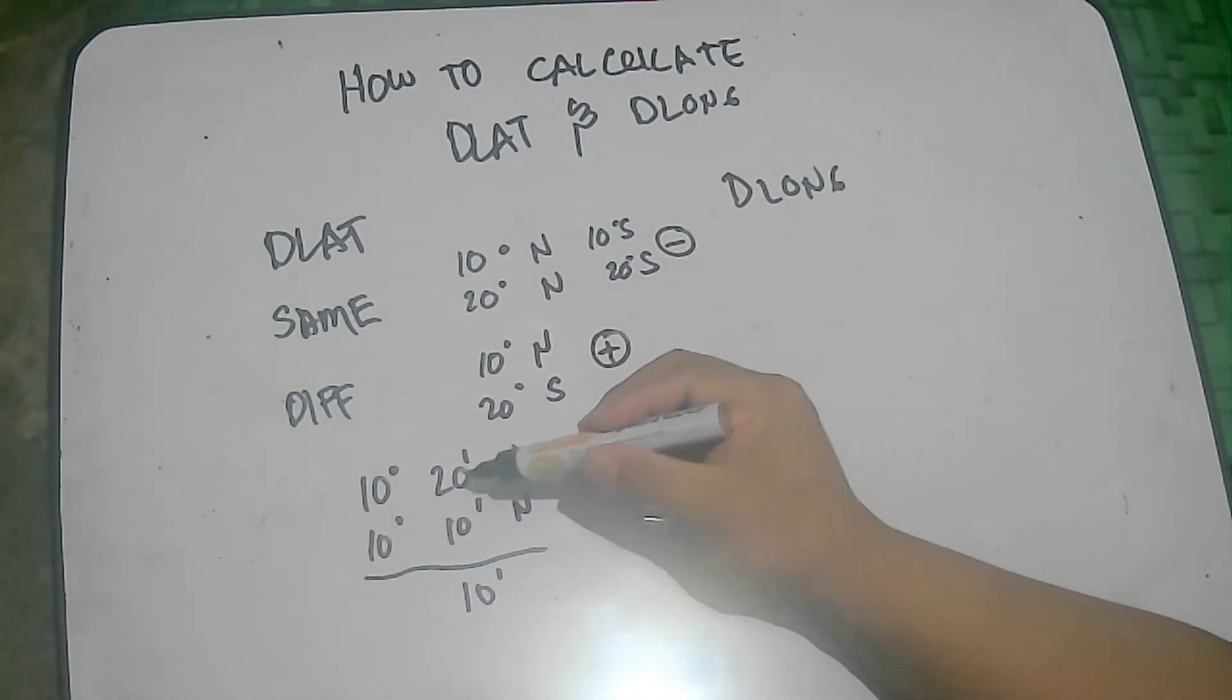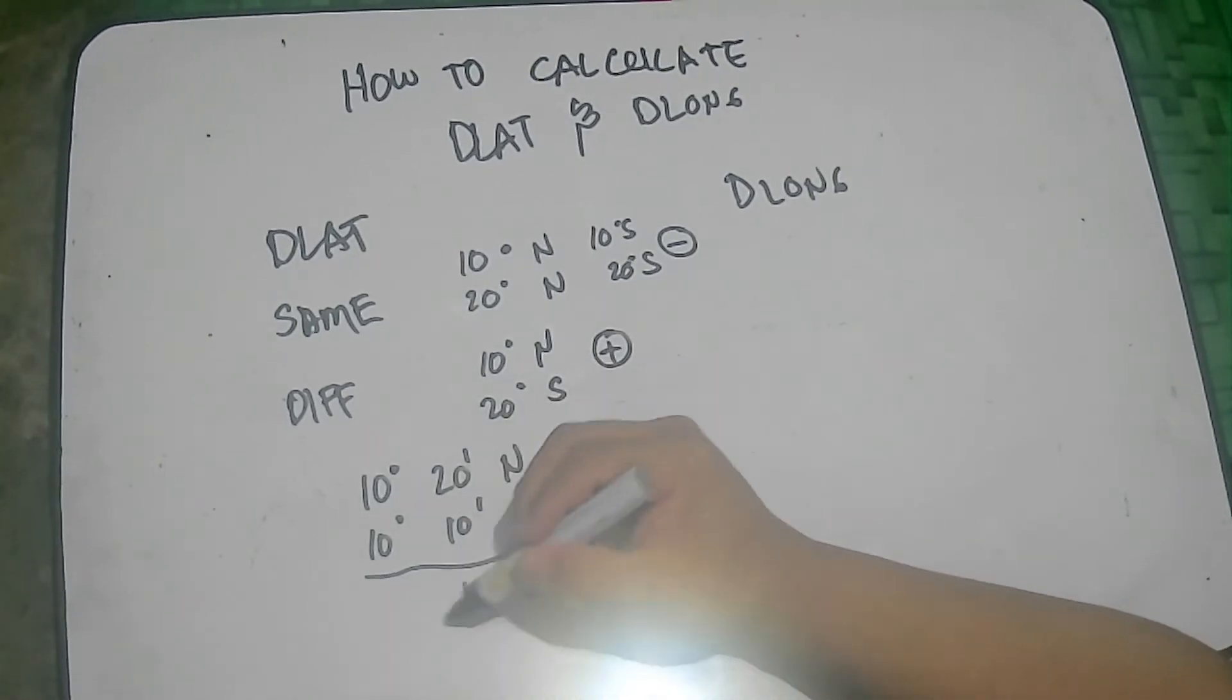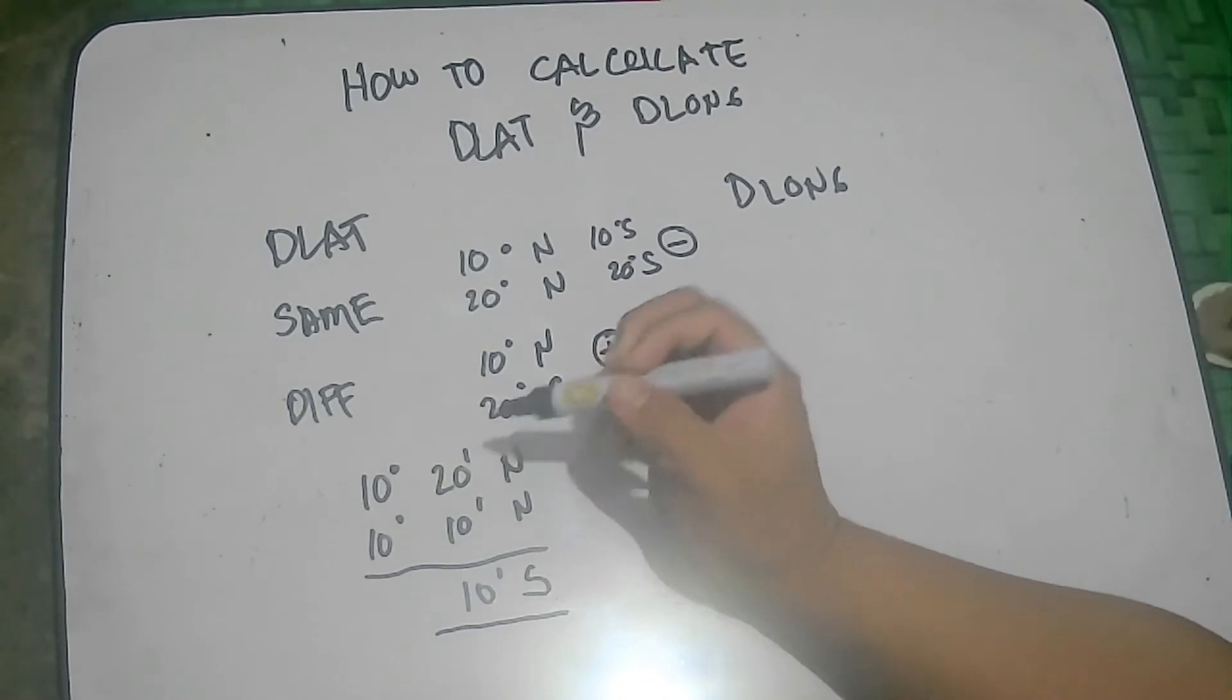So, by looking at this direction, yung galing tayo sa 10 degrees 20, we are going down to 10 degrees and 10 minutes. So, it will be south. Okay? Yan naman yung dilat natin.